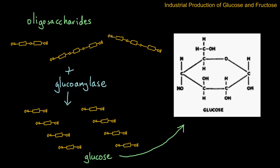So that's basically stage two in the three-step process of the industrial production of glucose and fructose from starch.